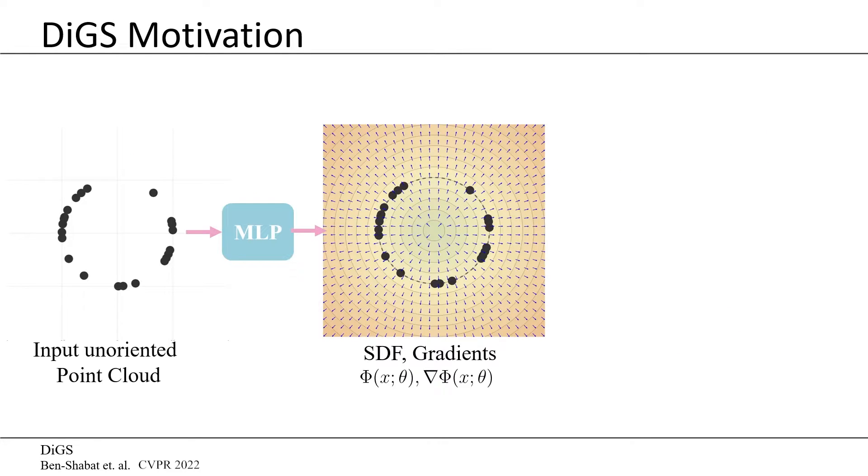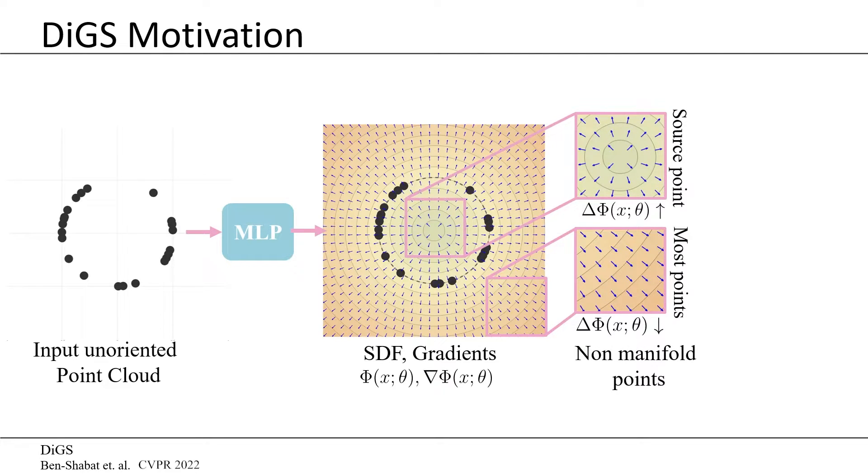If we look at the 2D circle example, we can see that the divergence is indeed low everywhere except the circle center, which is a sink point. Therefore, adding a term that will push the divergence to be low is beneficial.